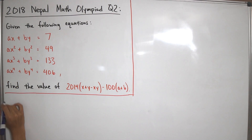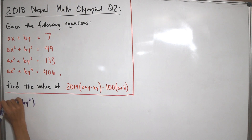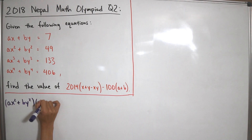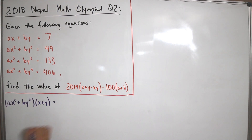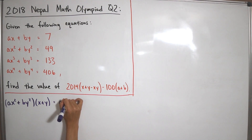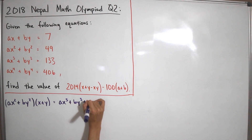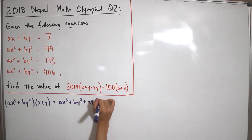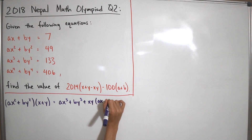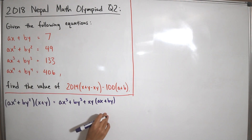To start, take ax² + by² and multiply both sides by (x + y). Performing the FOIL method and simplifying, this yields ax³ + by³ plus xy times (ax + by).